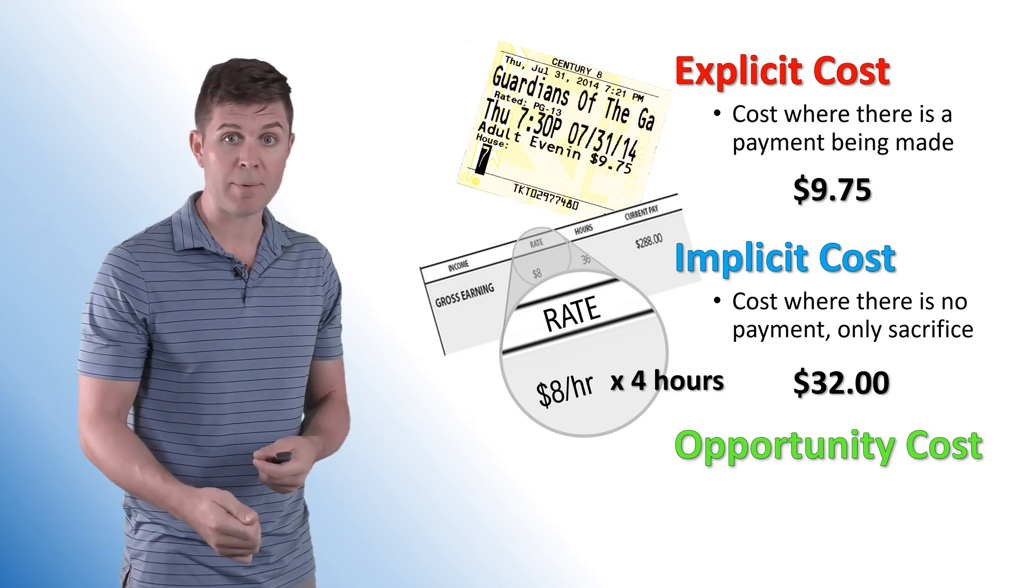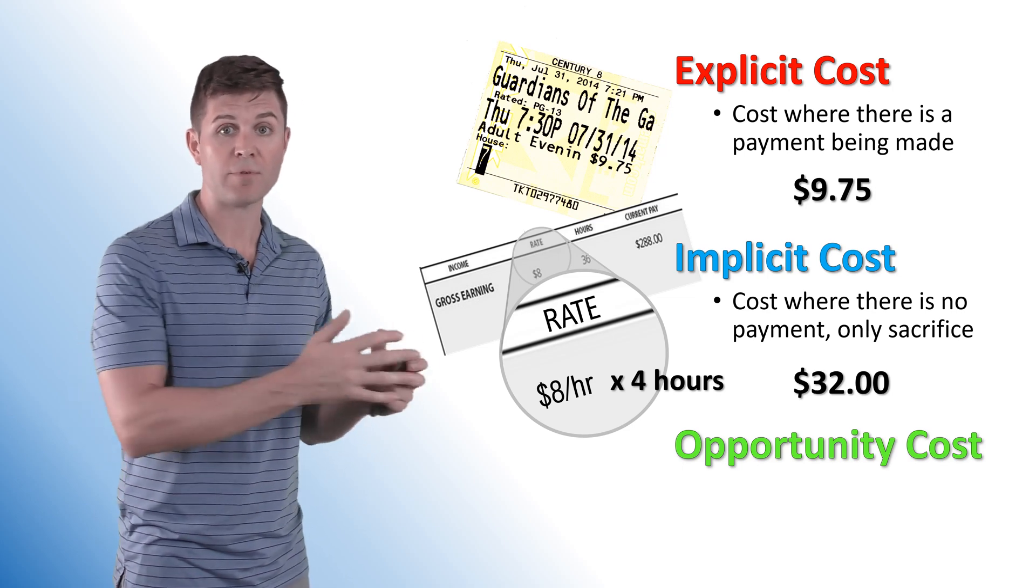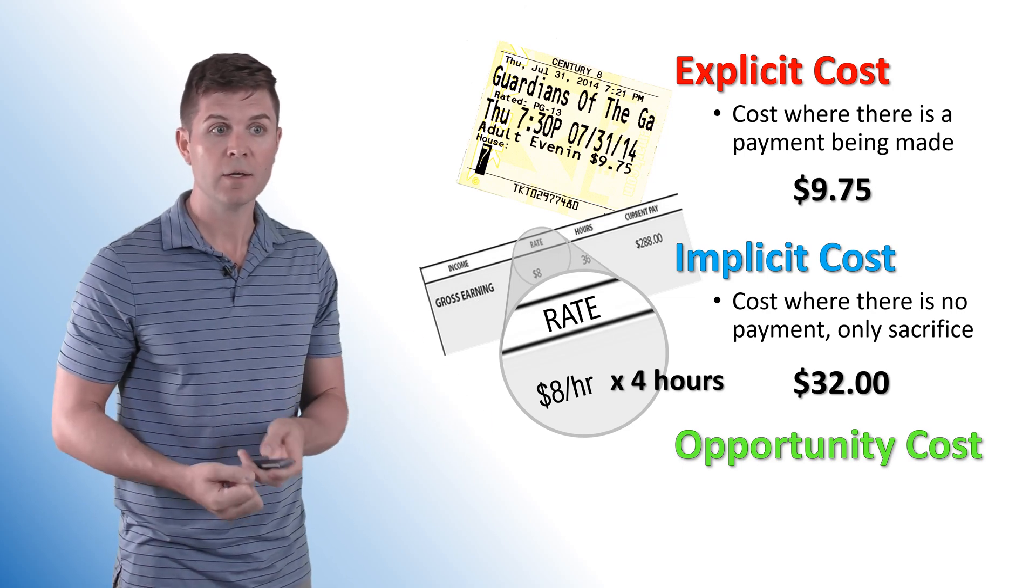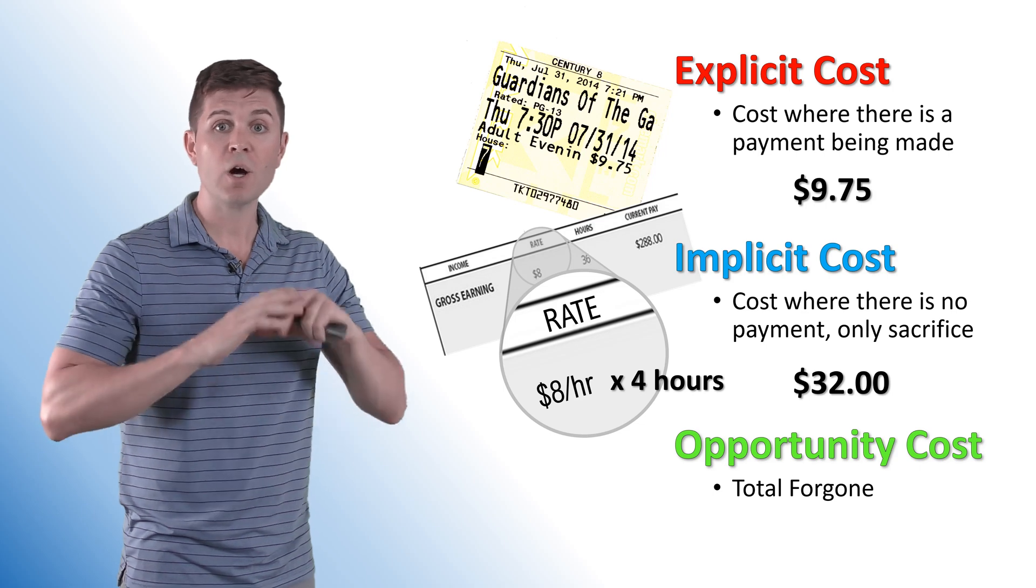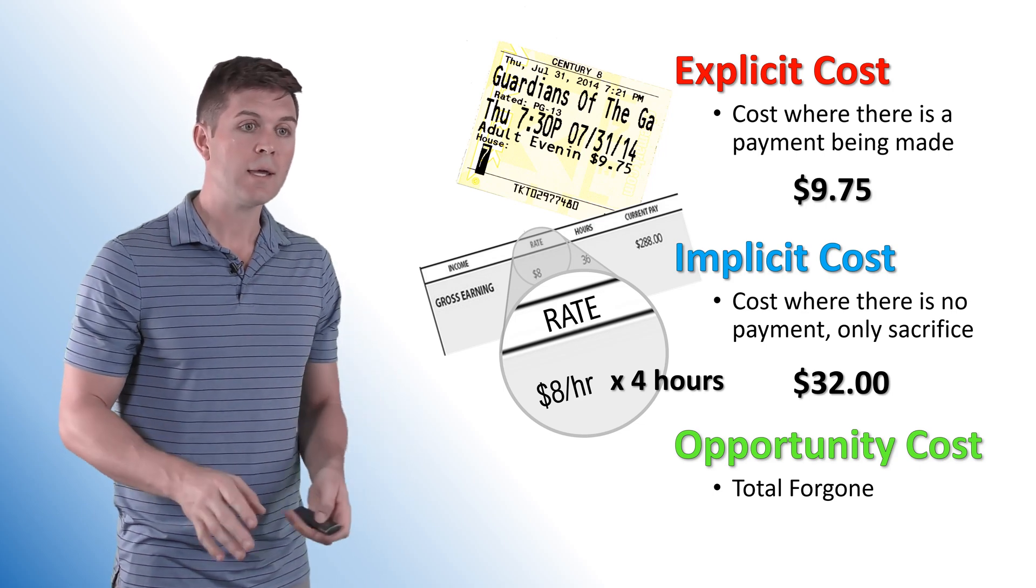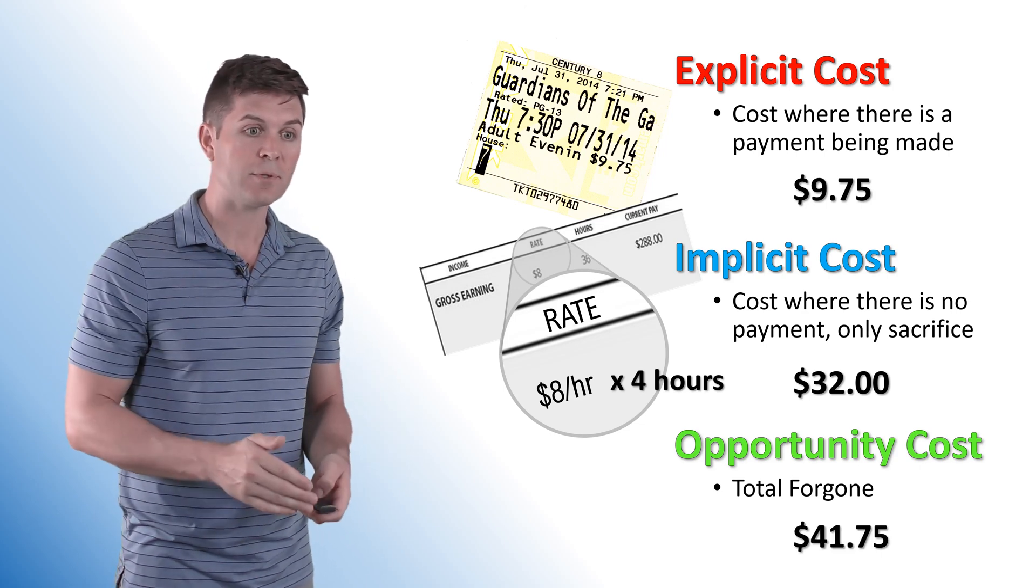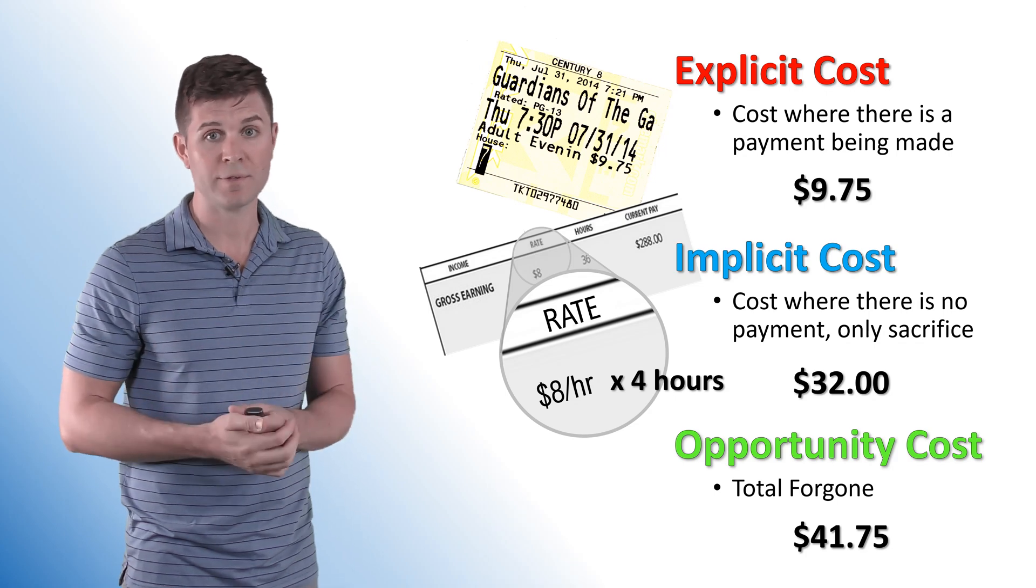So explicit is what you pay out of pocket. Implicit is the sacrifice, what you could have done instead. So in this case, my opportunity cost is the total foregone. It is the explicit plus the implicit cost. In this case, it's $41.75.